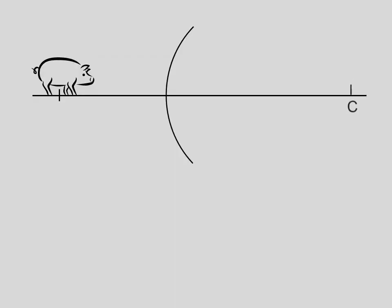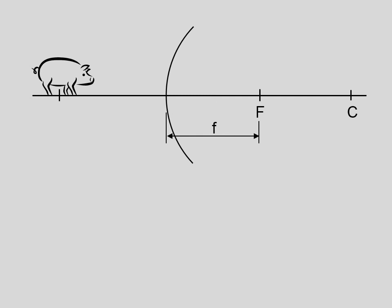Here we have a convex mirror. The center of curvature would be on the right. The focal point would be halfway in between the center of curvature and the mirror. Little f is the focal length.